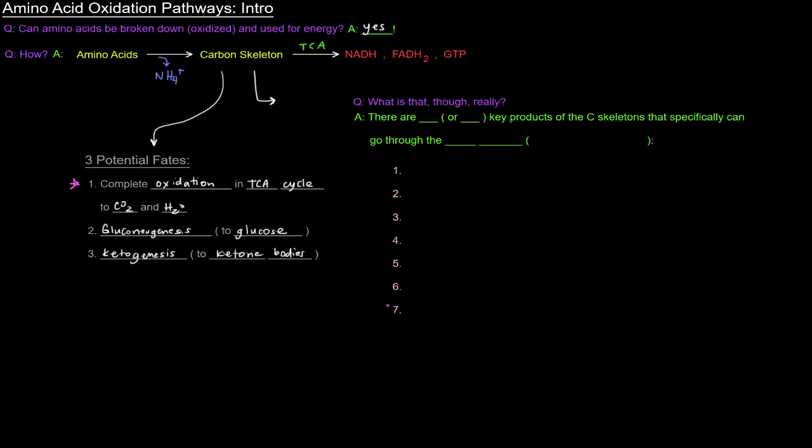So this carbon skeleton, though, we've talked about it being the alpha-keto acid of that amino acid. But what is it really, though? Because not every alpha-keto acid of an amino acid is a TCA cycle intermediate. So, what is this really? Well, what we're thinking about is the idea that there are six or seven, depending on how you look at it, key products of the carbon skeletons that specifically can go through the TCA cycle or one of the other fates, which we won't talk about right now.